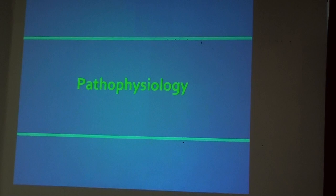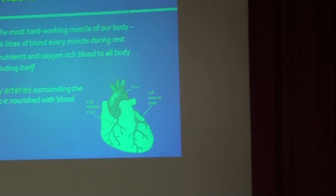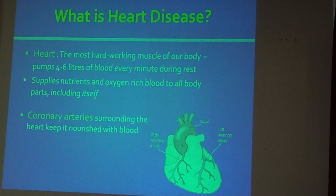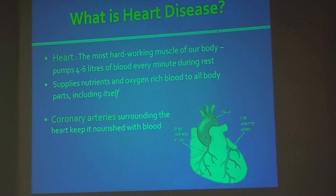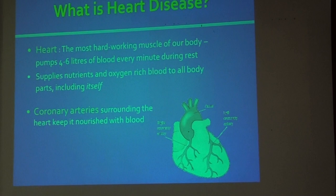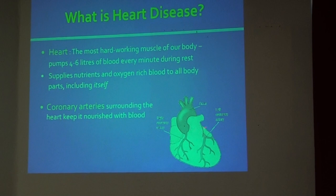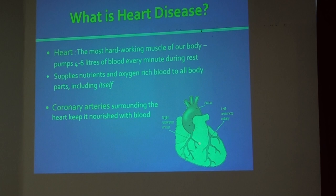This is a big health issue, but it is also very preventable. To understand prevention, we need to understand the pathophysiology. The heart is the hardest-working muscle in our body — it pumps about four to six liters of blood each minute, about 2,000 gallons per day, supplying nutrients and oxygen to the rest of the body. Since it is the hardest-working muscle, it also needs oxygen and nutrients itself, supplied by the coronary arteries on top of the heart.